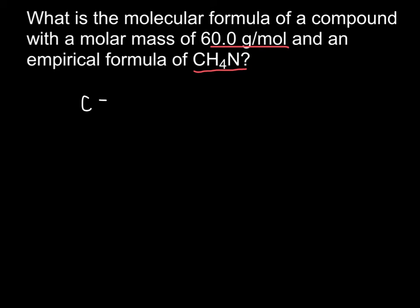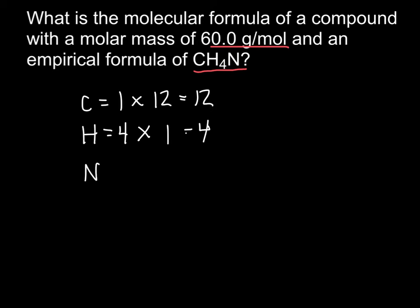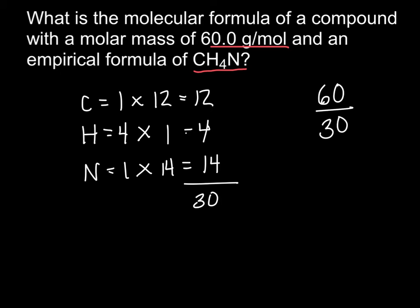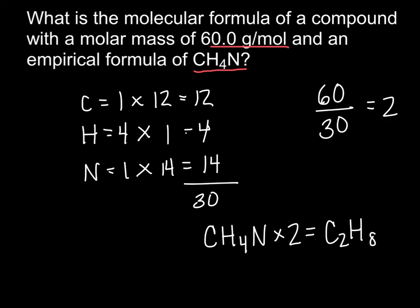Our first step is to calculate the molar mass of CH4N. We have 1 carbon: 1 × 12 = 12. We have 4 hydrogens: 4 × 1 = 4. We have 1 nitrogen: 1 × 14 = 14. Adding these up: 12 + 4 + 14 = 30 grams per mole. Then I take the given molar mass of 60 and divide by 30, giving 2. I multiply the empirical formula CH4N by 2 to get a molecular formula of C2H8N2.